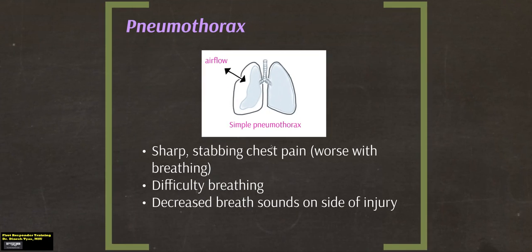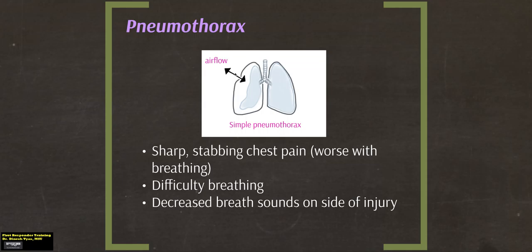Now we will discuss pneumothorax. Symptoms of a pneumothorax are sharp, stabbing chest pain which may be worse with breathing, difficulty breathing, and decreased breath sounds on the side of the injury. In a simple pneumothorax, there may be a penetrating injury that breaks an area of the lung, allowing air flow between and causing the lung to collapse on that side.